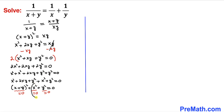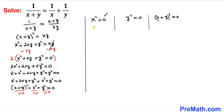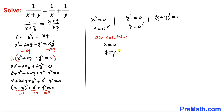So from x squared equals 0, we get x equals 0. From y squared equals 0, we get y equals 0. And from (x plus y) squared equals 0, we get x plus y equals 0. So our solution appears to be x equals 0 and y equals 0.